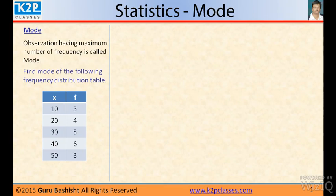Frequency distribution is given. Find mode of the following frequency distribution table. First column is observation and second column is the frequency of observation. If you see, 40 occurs the maximum time, that is 6. That is why mode of this frequency distribution is 40.